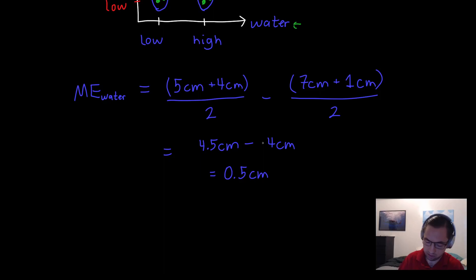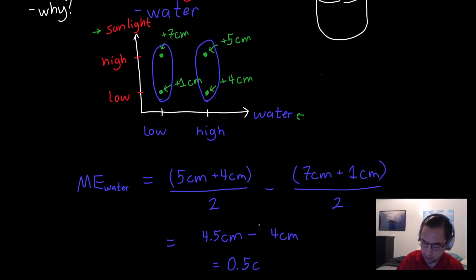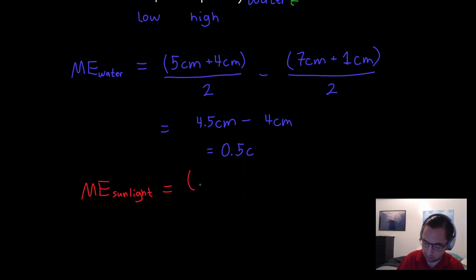What about for sunlight? So let's ask, what is the main effect of sunlight? And again, that's just the average of all the experiments in the high condition, which is just these two. So seven centimeters plus five centimeters over two.